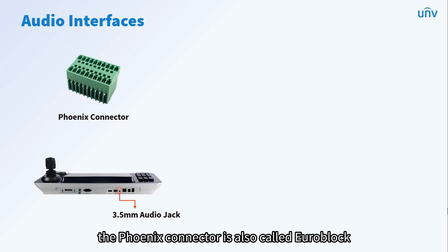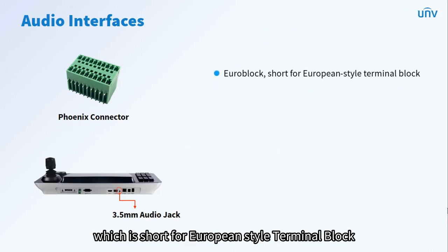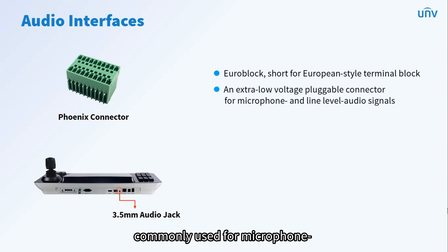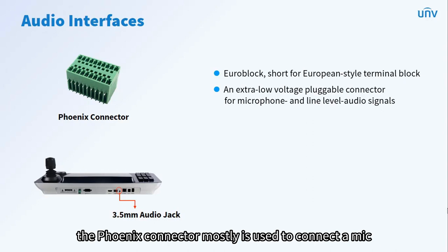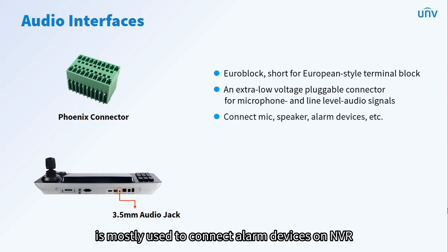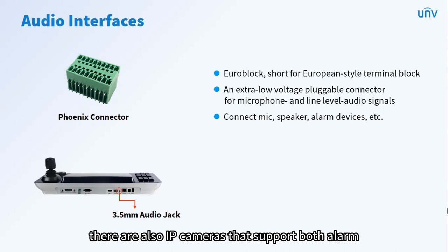The Phoenix connector, also called Euroblock — short for European style terminal block — is an extra low voltage pluggable connector and terminal block combination commonly used for microphone and line level audio signals. The Phoenix connector is mostly used to connect a mic, speaker, and alarm devices. In CCTV systems, it is mostly used to connect alarm devices on NVR, and there are also IP cameras that support both alarm and audio access through Phoenix connectors.